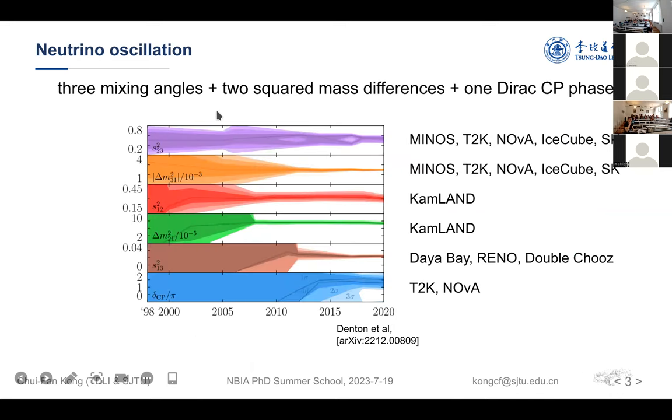Currently, the neutrino oscillation, the measurement of neutrino oscillation can be described by, in total, six parameters, which includes three mixing angles, two squared mass differences, and one Dirac CP phase. In the past 20 years, there are many neutrino experiments that can measure such oscillation parameters, and we can see we are now entering the high precision level. But unfortunately, the final one, the Dirac CP phase, the current uncertainty is quite large, so we still have a long way to precisely measure the Dirac CP phase.